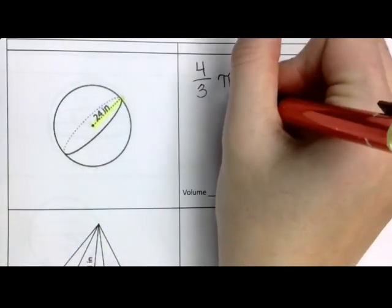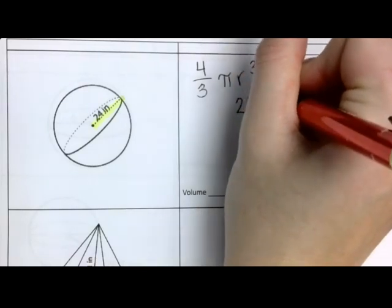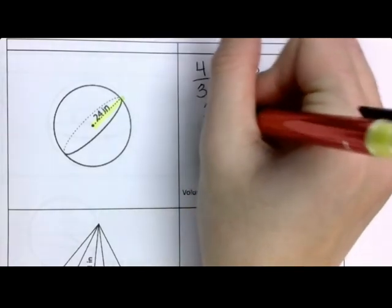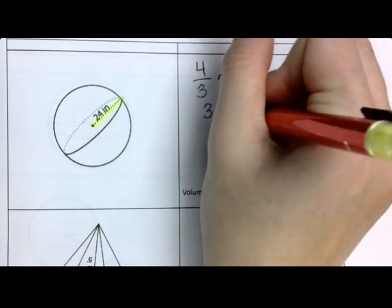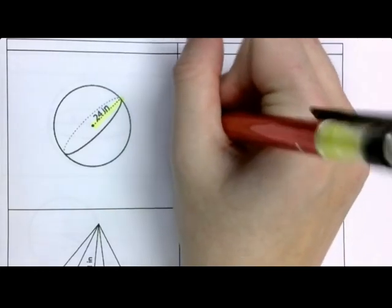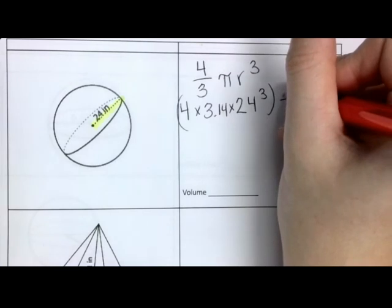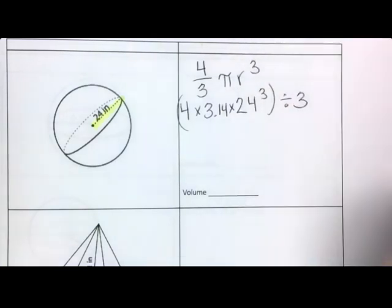I'm going to have 24, that's going to be cubed. I'm going to have 3.14. Just like our notes, we're not going to have a fraction. We're going to do all of our multiplication, and then we are going to divide by 3.